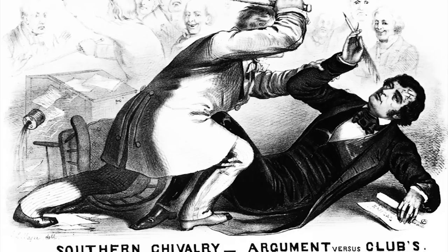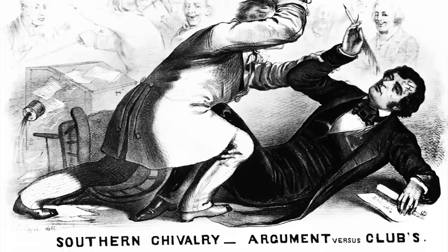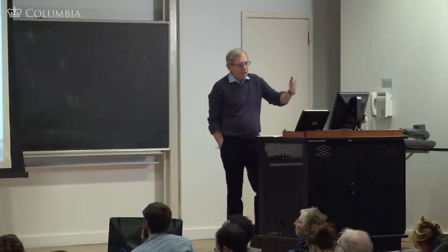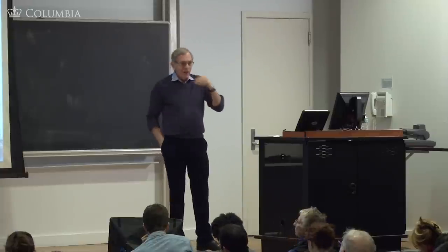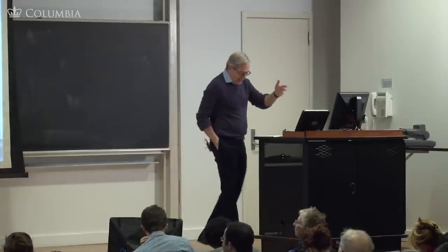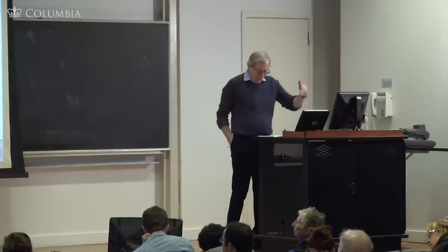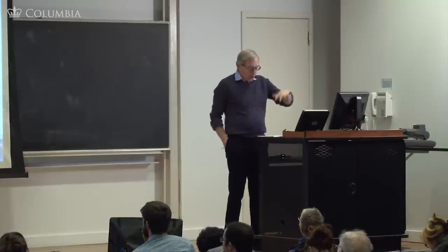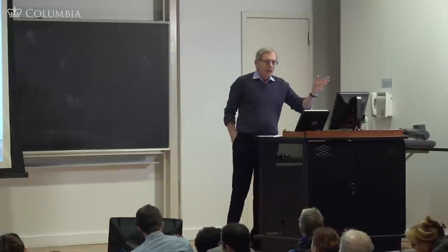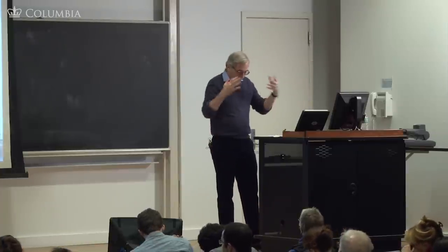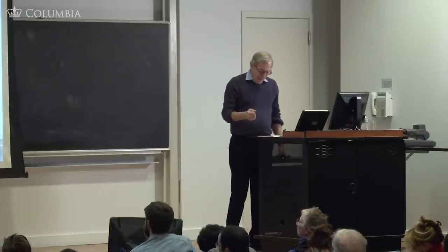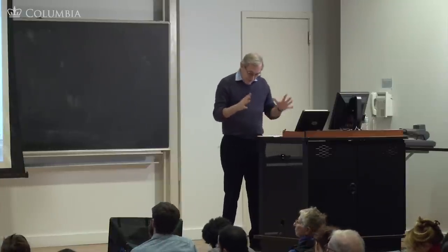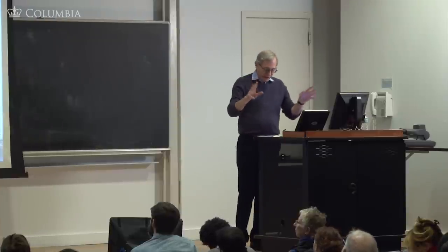This is Sumner being beaten on the floor of the Senate by Preston Brooks, a congressman from South Carolina. Sumner had given a speech called 'The Crime Against Kansas,' in which he made many negative comments about Senator Butler of South Carolina. Brooks, who was a relative of Butler, came into the Senate floor the next day after the session was over to confront Sumner. He very generously waited until the lobby had cleared of ladies, he later said.